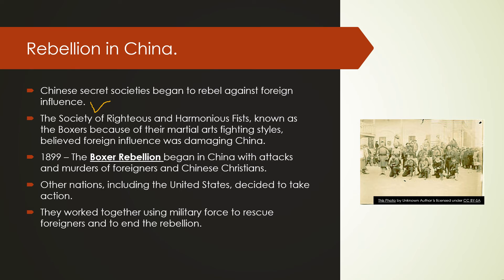Rebellion in China: Chinese secret societies began to rebel against foreign influence. The Society of Righteous and Harmonious Fist — more commonly known as the Boxers because of their martial arts fighting style — believed foreign influence was damaging China. In 1899, the Boxer Rebellion began with attacks and murders of foreigners and Chinese Christians. They even attacked their own people who were converting to Christianity. You can see a picture of the Boxers here. Other nations, including the United States, decided to take action to protect their citizens living abroad and to defend Chinese Christians.